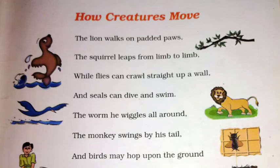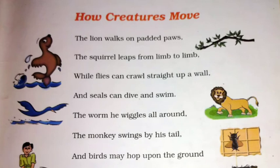The lion walks on padded paws. The squirrel leaps from limb to limb. While flies can crawl straight up a wall. And seals can dive and swim.